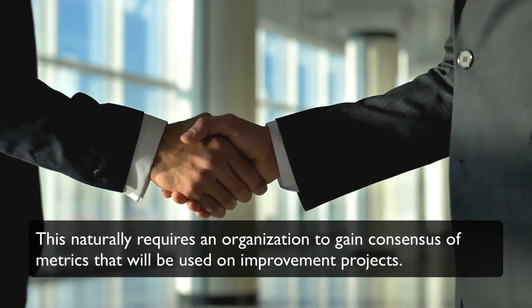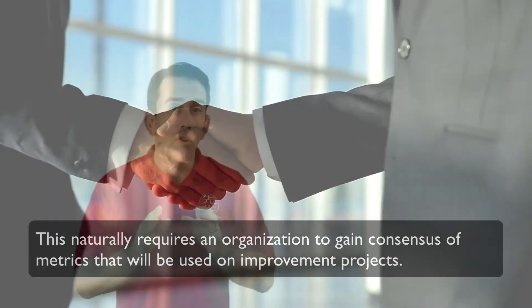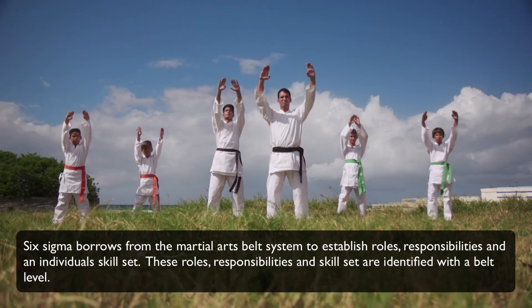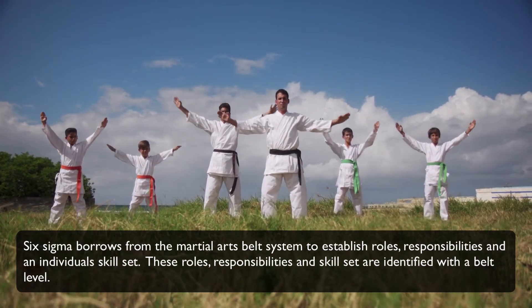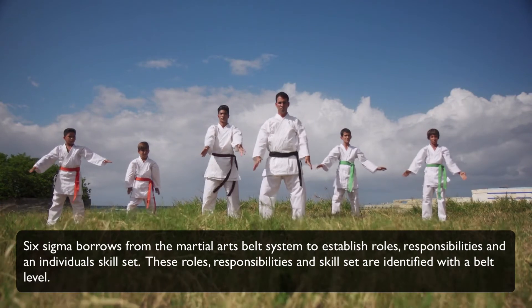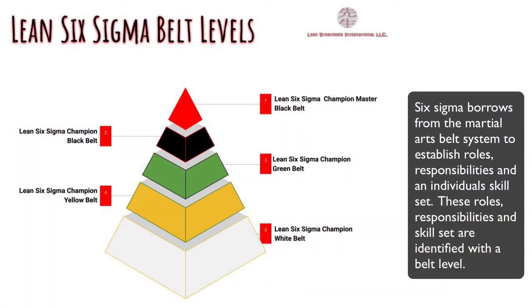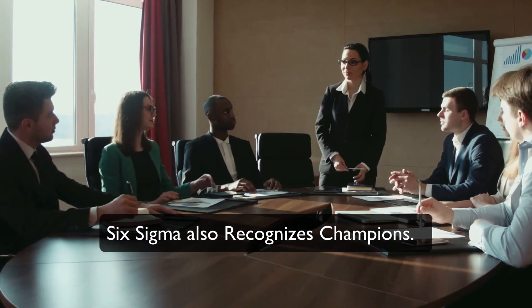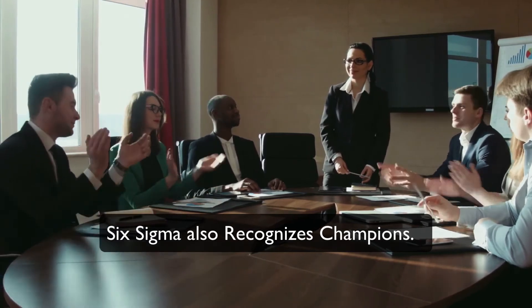Six Sigma is also very focused on developing the talents of people. The strategy designates clear roles and responsibilities for people working on projects. It does this by borrowing from the martial arts belt system. Based on the role, skill set, and experience, an individual may hold one of five different belt levels as shown here. Along with these belt levels, the Six Sigma structure also recognizes champions within the organization.